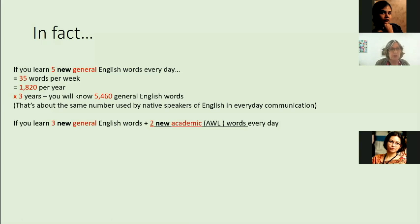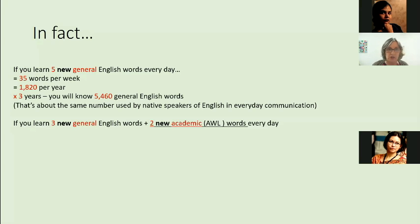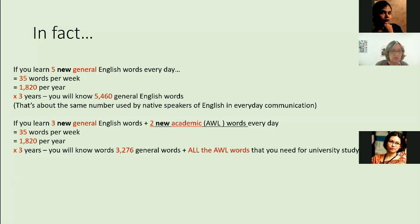Now let's think about mixing up general English words and academic words. We call these AWL, or Academic Word List words. If you learn three general English words and two academic words every day — again 35 words a week, around 1,800 per year — in three years you will know around 3,000 general words and all the key academic words that you need for university study. Not the special words, but the key academic words.